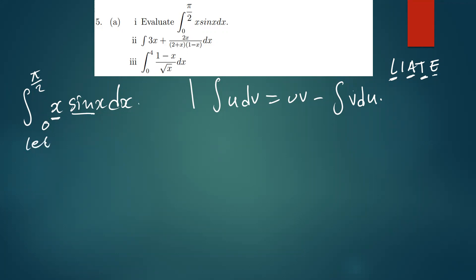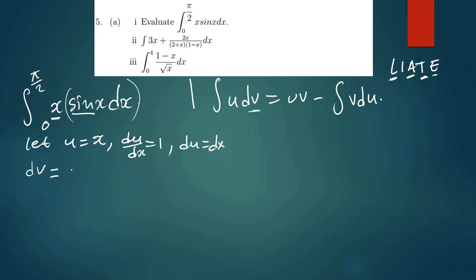So algebra is what we choose as u. We let u equal x. Differentiating gives du/dx equals 1, so du equals dx. The remaining part is what we call dv, so dv equals sin(x) dx.